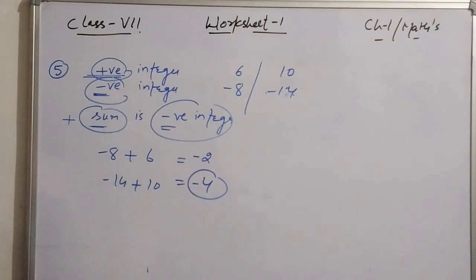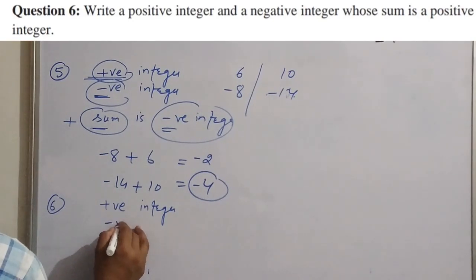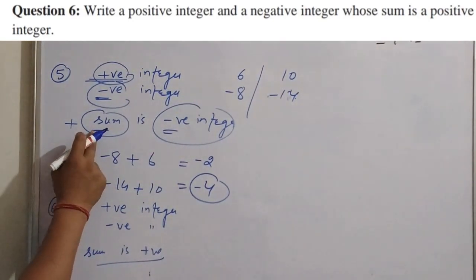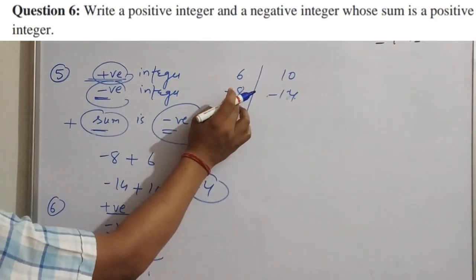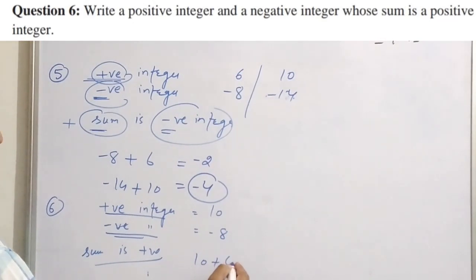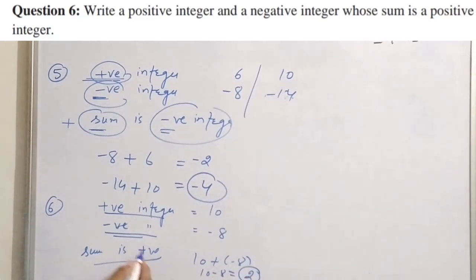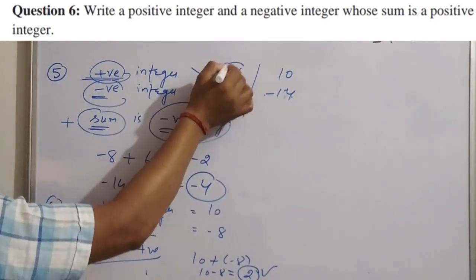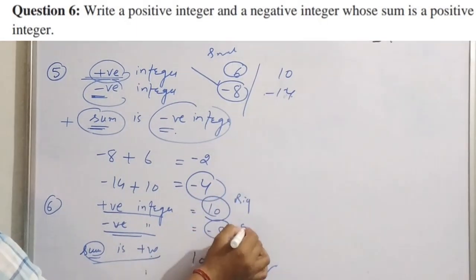Question 6 is the opposite of question 5: find one positive integer and one negative integer such that their sum is positive. When you want the sum to be positive, the positive number must be larger than the negative one. For example, 10 + (−6): opposite sign, subtract, gives +4. So when the sum must be positive, increase the positive digit and keep the negative smaller.